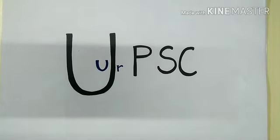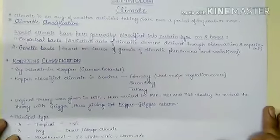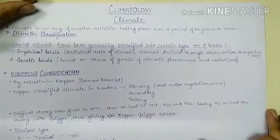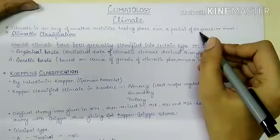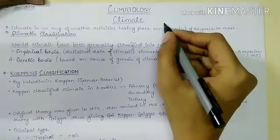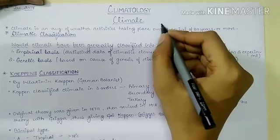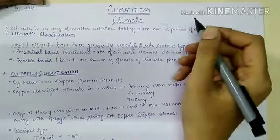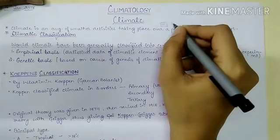Hello friends, welcome back. Today in climatology we will be completing climatic classification given by Köppen, Thornthwaite, and Trewartha. Climate is actually an average of weather activities taking place over a period of 30 years or more. When the average of weather activities of about 30 years or more is taken, this whole average is known as climate.